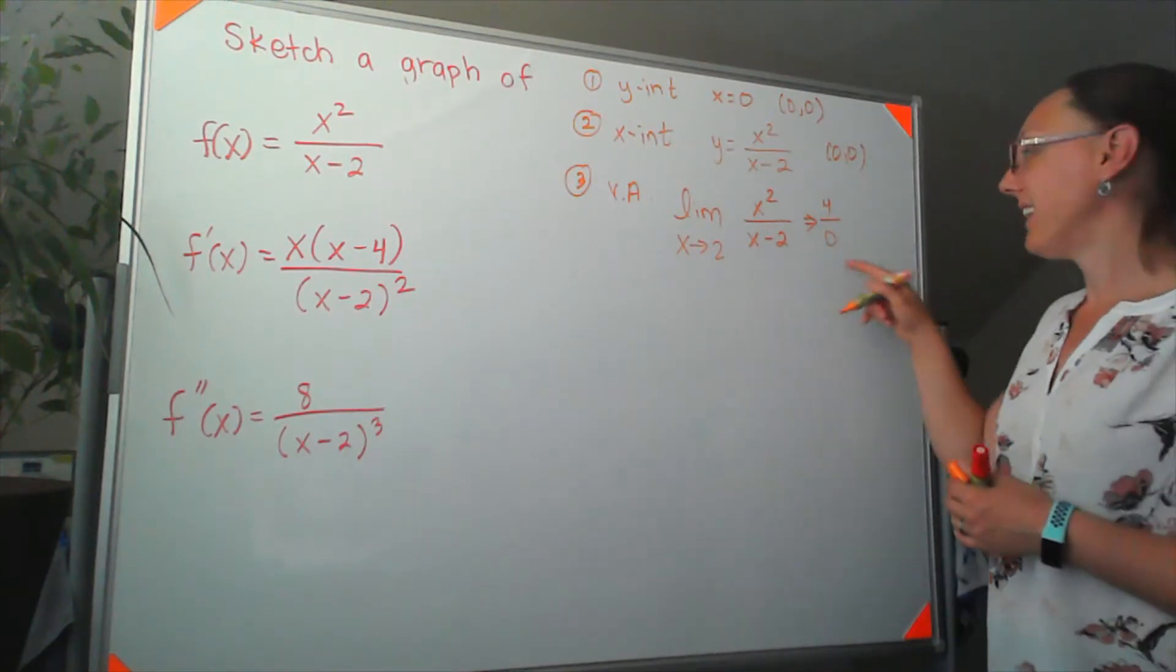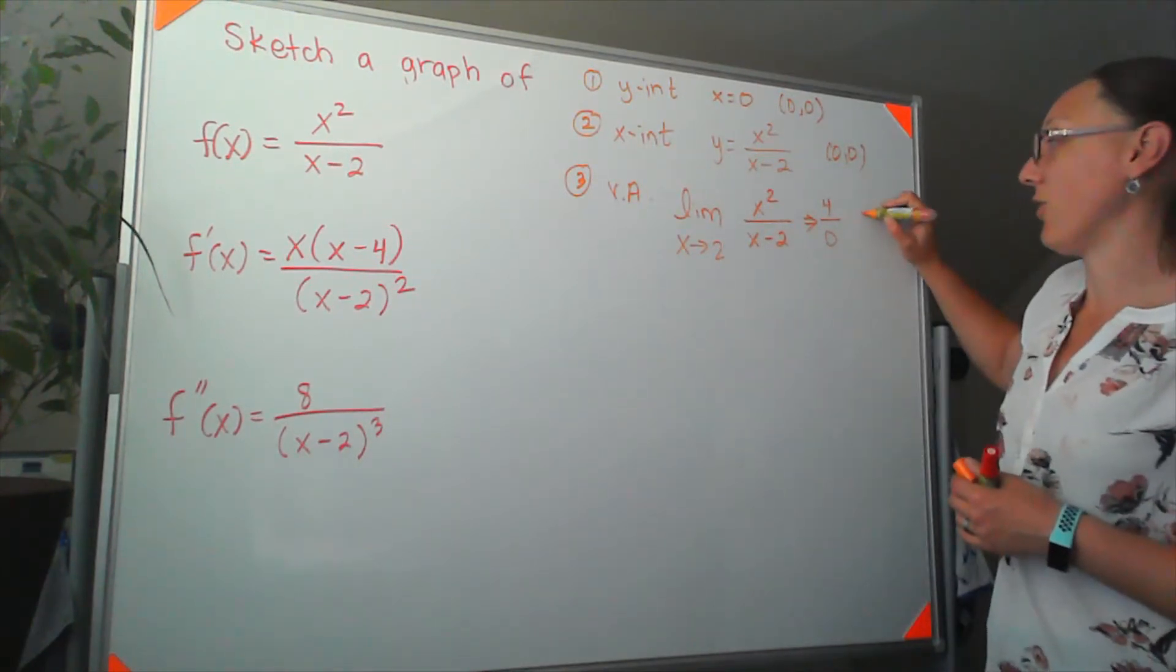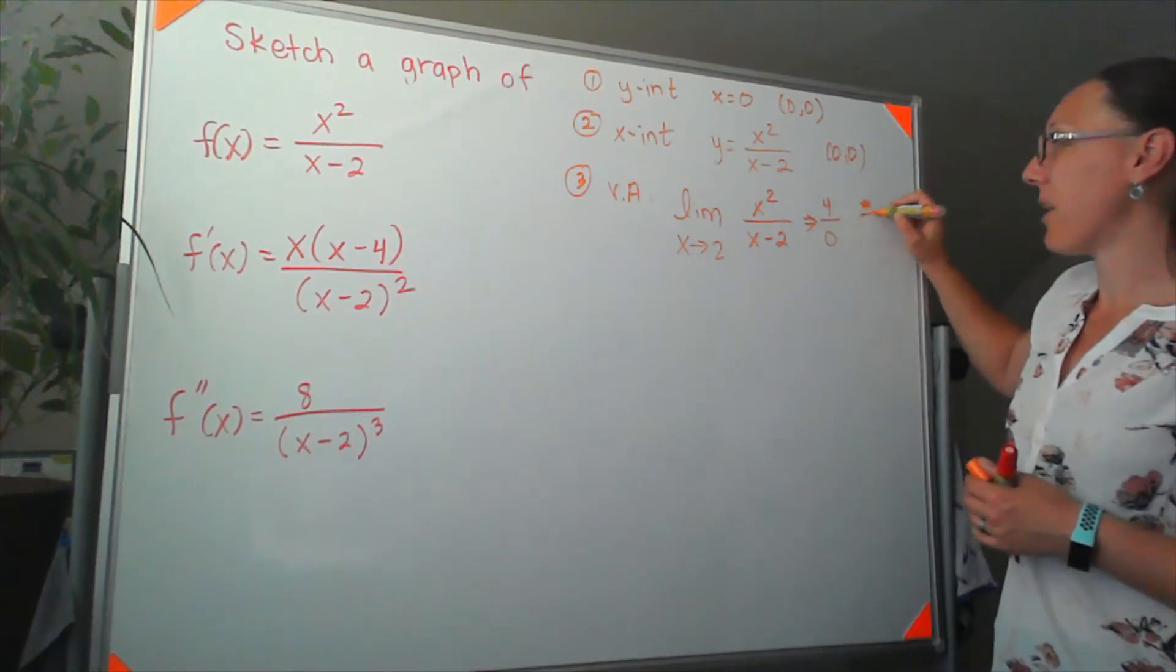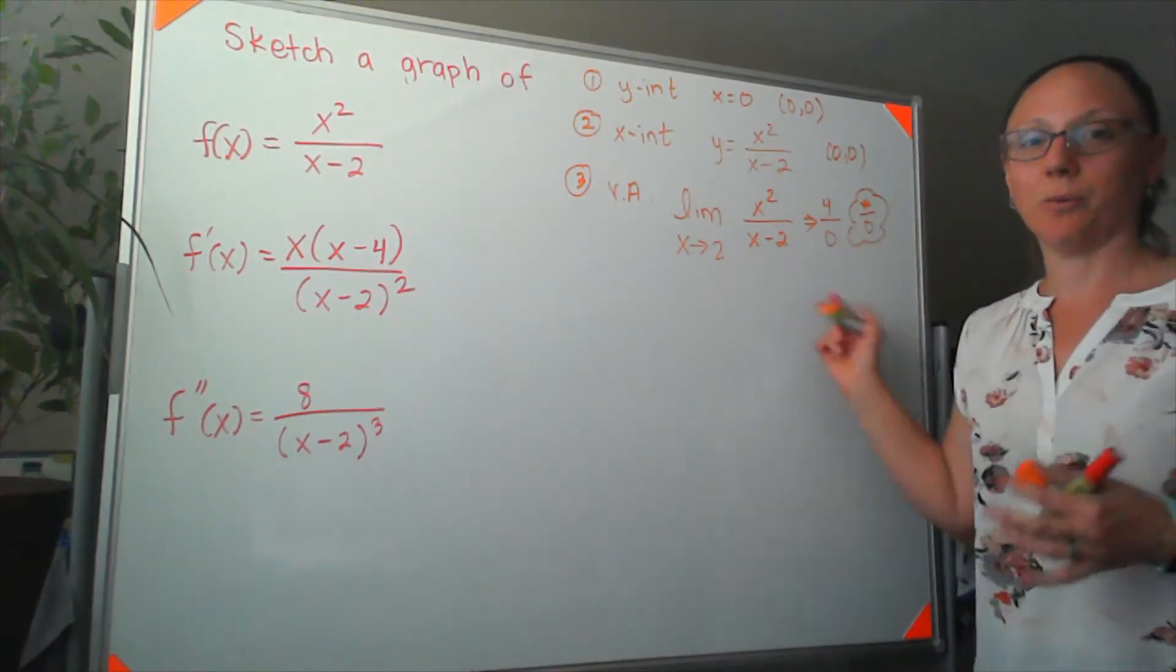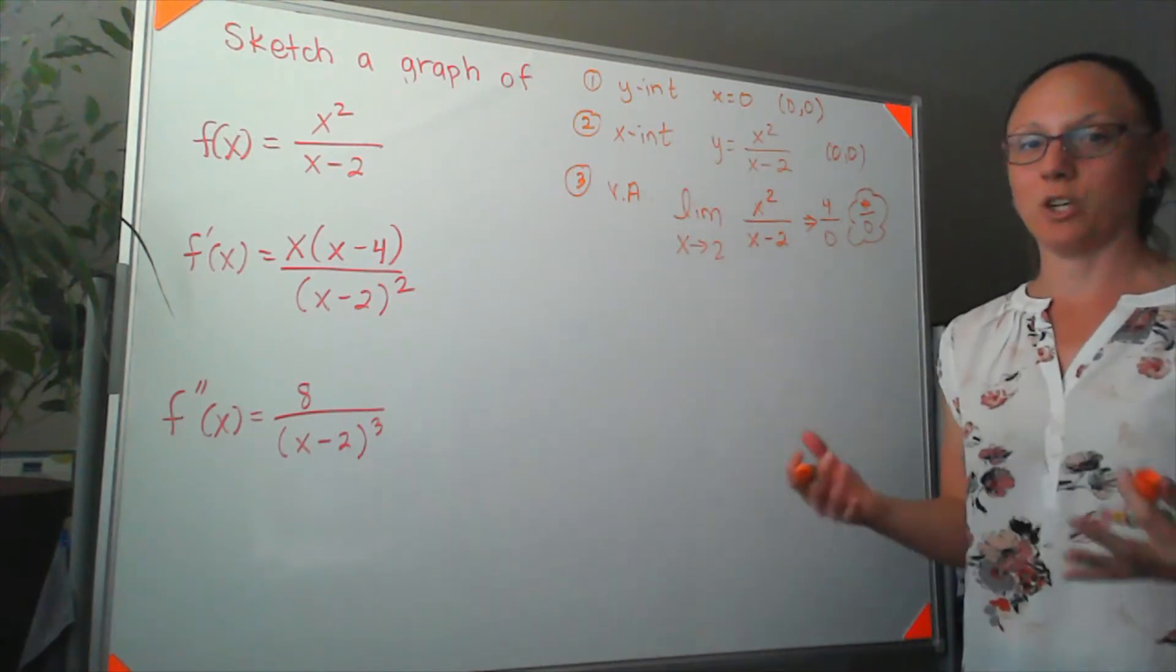So this is, in fact, telling me that we have a vertical asymptote. And whenever we get a number divided by zero for that limit, that's our clue. Yep, that was a vertical asymptote. We should put that on our graph.